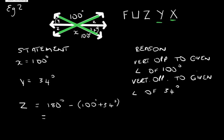Now we know that angle Z plus angle X plus 34 degrees must add up to 180 degrees. Why? Because there are angles in a straight line. So we can go ahead and say that Z is equal to 180 degrees minus 100 degrees plus 34 degrees and what will that give us? It will give us an answer of 46 degrees. And our reason is because it's angles on a straight line.